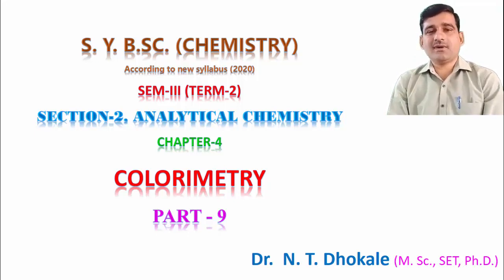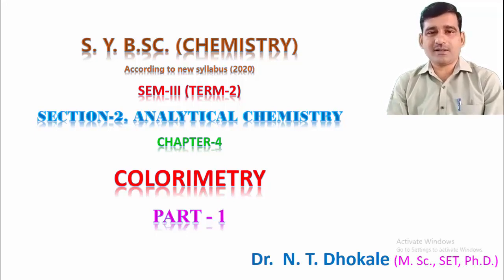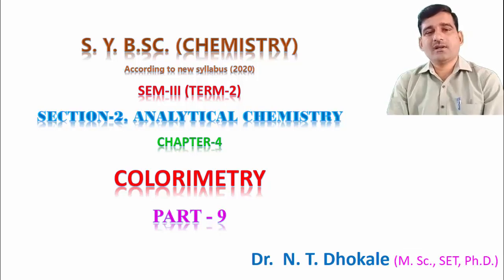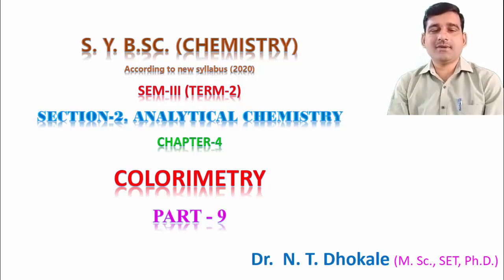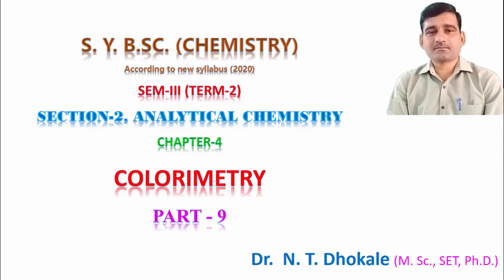In the last lecture, we also discussed a cross view of this colorimeter and the radiation source. The radiation source is nothing but the device which can emit radiation in the ultraviolet as well as visible region, where light is required for the absorption of light.